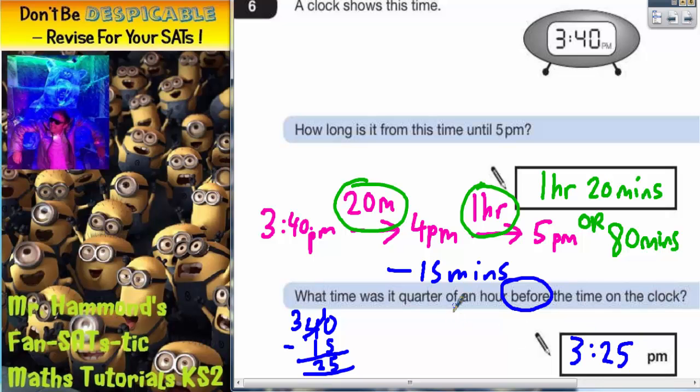You could just count back 15 minutes. You could do it in two stages. You could say, okay, 3:40 take off the 5 minutes would be 3:35, then take off the 10 minutes would take you to 3:25. Either way, it's up to you. But the final answer is 3:25pm.